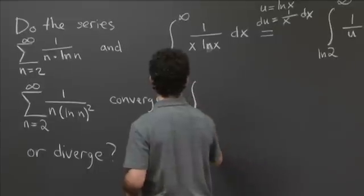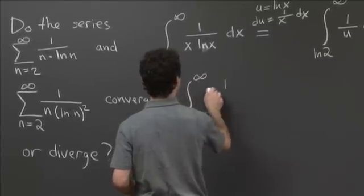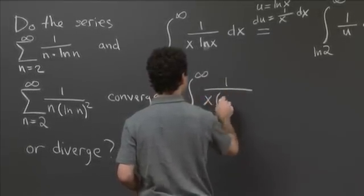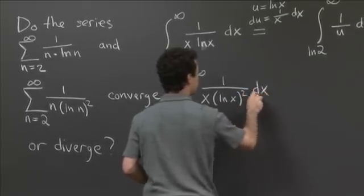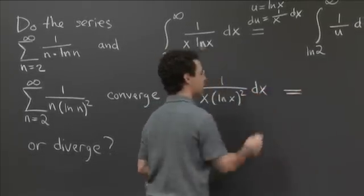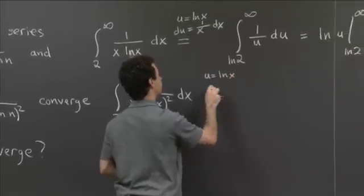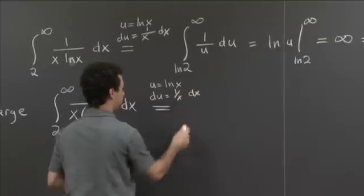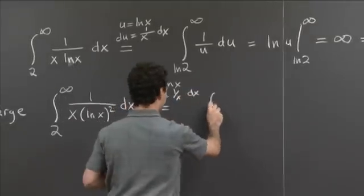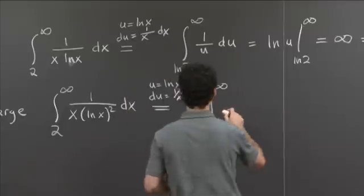And in fact, so the integral that we want to look at is the integral from 2 to infinity of 1 over x times log of x squared dx. And the same substitution is going to work here. So we're going to use the substitution u equals ln x, du equals 1 over x times dx. And the bounds are going to be the same, ln 2 to infinity.